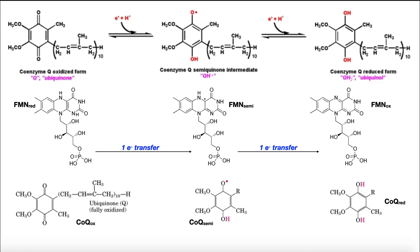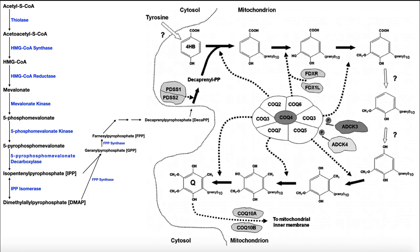Pretty much all of our cells have an electron transport chain, with very few exceptions — erythrocytes (red blood cells) and platelets being examples. Since the vast majority of our cells utilize electron transport chains, coenzyme Q is extremely important, and having this biosynthetic pathway is critical when dietary intake alone is not enough.